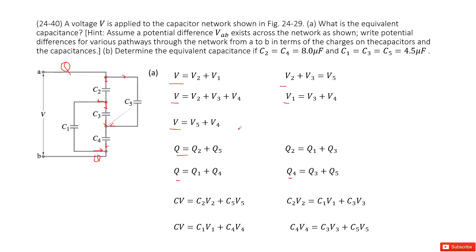Now we have many equations. The key step is to replace each charge Q with the corresponding capacitance times voltage. So Q becomes C times V, Q2 becomes C2 times V2, Q5 becomes C5 times V5, Q1 becomes C1 times V1, Q4 becomes C4 times V4, and Q3 becomes C3 times V3.